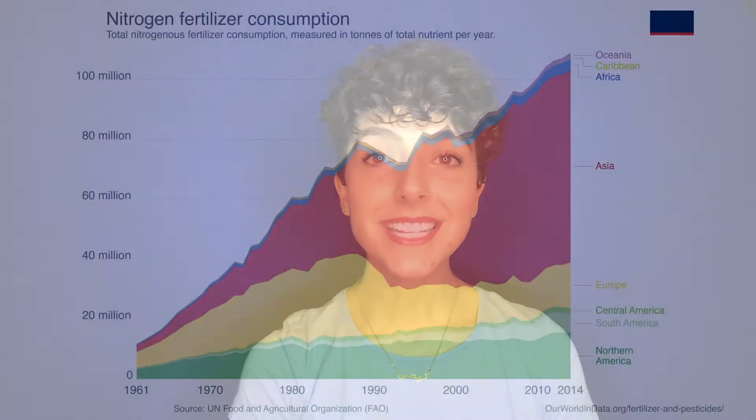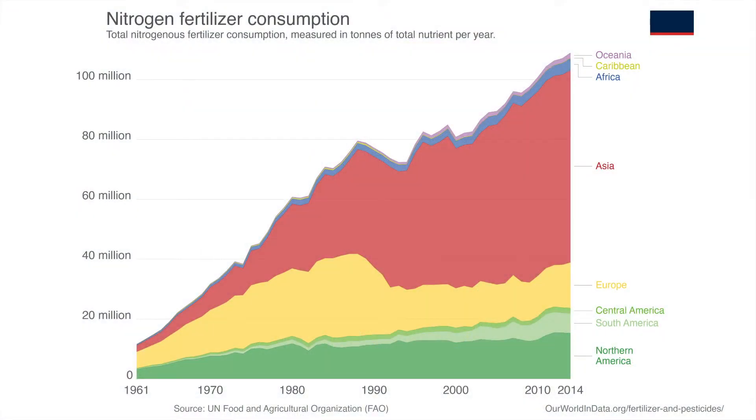Just under two centuries later, the global fertilizer market value has exceeded 155.8 billion US dollars! The vast majority of phosphorus compounds mined are consumed as fertilizers — up to 90% of all mined rock, in fact.